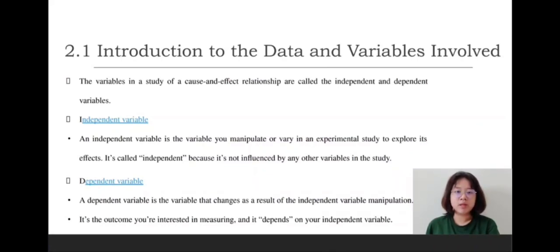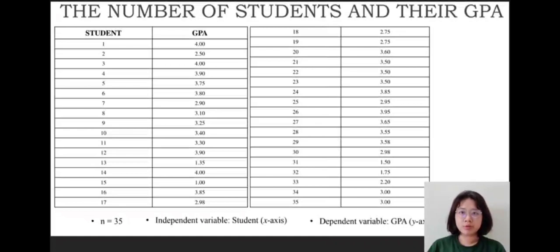Next is dependent variable. A dependent variable is the variable that changes as a result of the independent variable manipulation. It's the outcome you're interested in measuring, and it depends on your independent variable. The table shows the number of students and their CGPA. We have chosen 35 students as our sample.